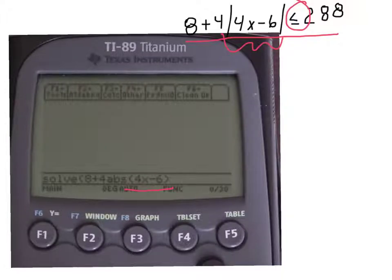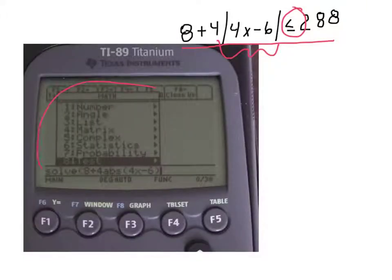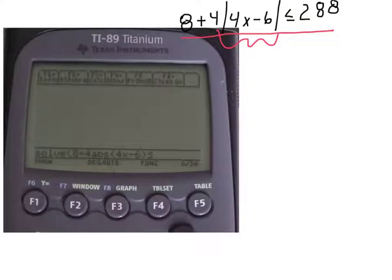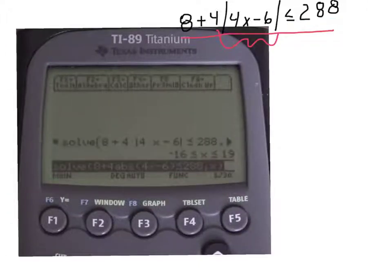Now enter the less than or equal sign: go to 2nd, Math, number 5. The drop-down box appears — scroll to number 8 and hit enter. Another drop-down appears with all your inequality signs. Choose less than or equal, which is number 4, and hit enter. There is the less than or equal sign. Now enter the rest of the inequality: 288, then a comma, then x — to let the calculator know we are solving for x — then close the parenthesis. Hit enter, and there is our answer: negative 16 less than or equal to x, which is less than or equal to 19.